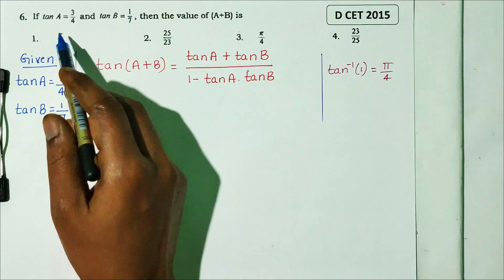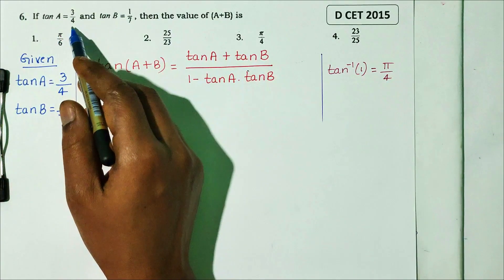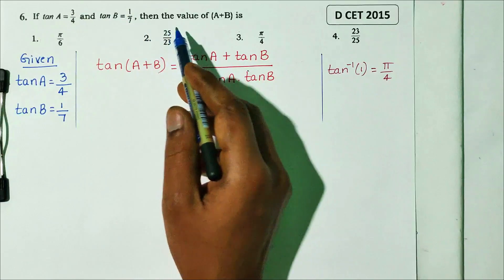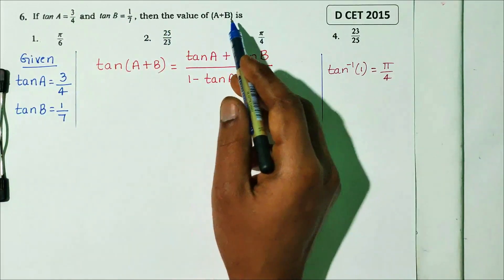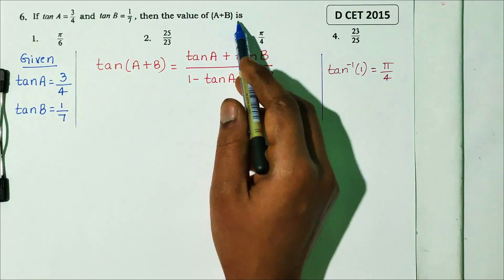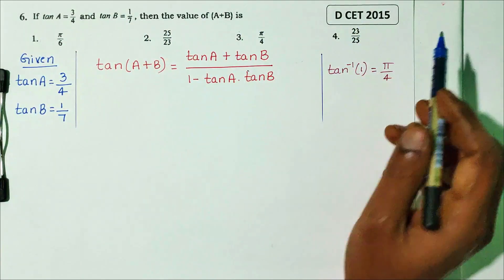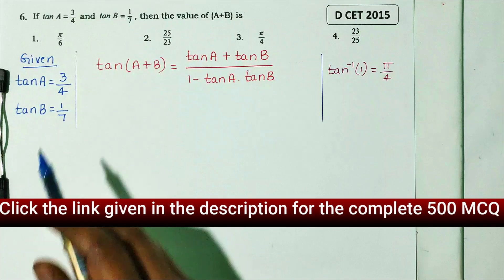Question No. 6. If tan A is equal to 3 by 4 and tan B is equal to 1 by 7, then the value of A plus B is. DCT 2015 question.